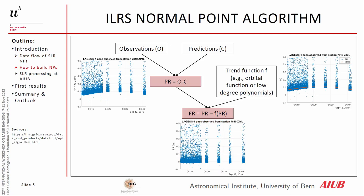How to build the normal points: first of all, we have the observations and we also do a prediction, getting observed minus computed on the left side. Then, to get rid of some trends, we fit a trend function, which can be an orbital function or low-degree polynomials. We then end up with the fit residuals, which, if the fit is good, should be only the random error of each observation.